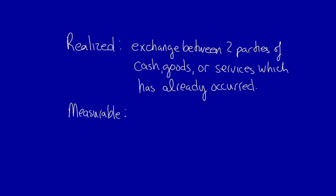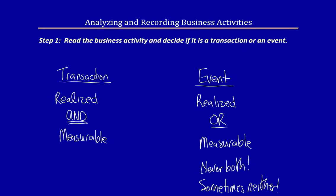What does measurable mean? This means it's measurable objectively in monetary terms — in other words, money. A transaction would be both realized, a done deal, and measurable — the dollar amount is known. An event, however, is not both. So you might have a done deal but not yet have the dollar amount, or you know the dollar amount but you have not done the deal yet. In that case this is an event, and events are never recorded in the accounting records.